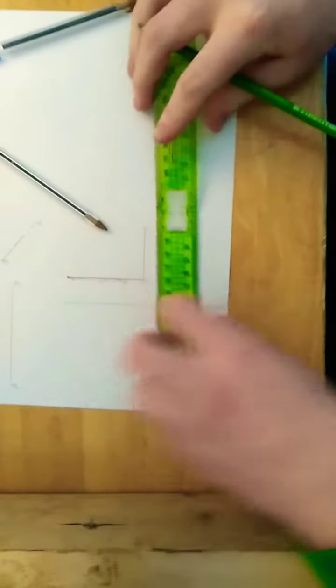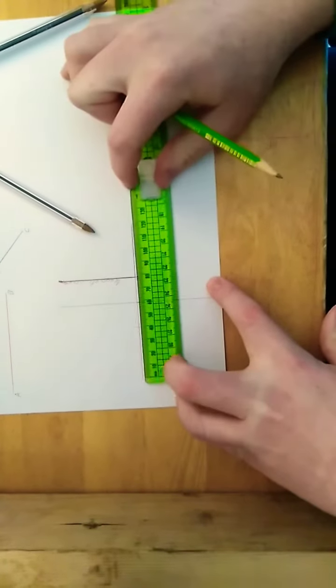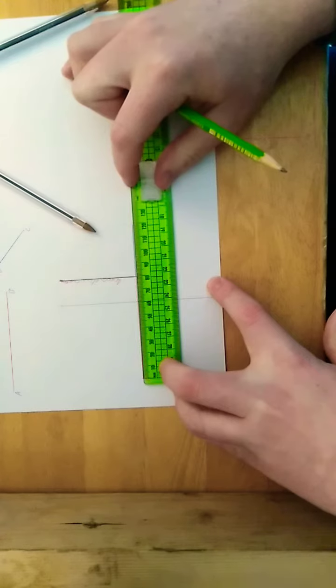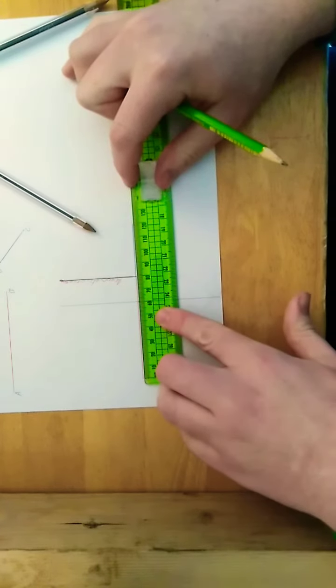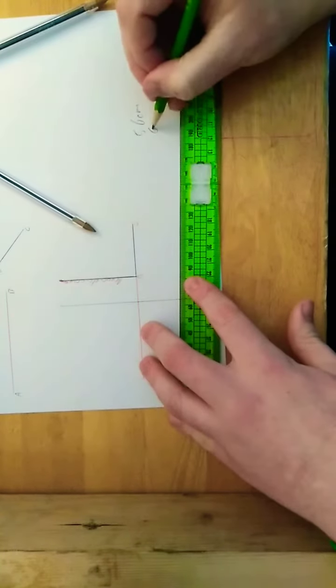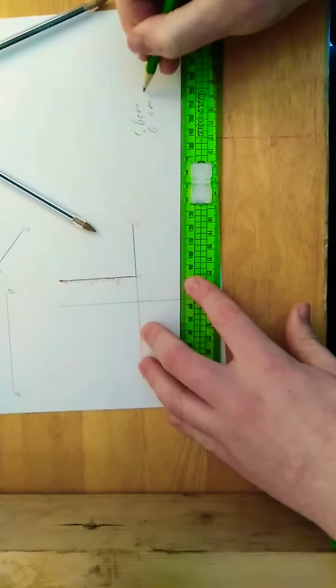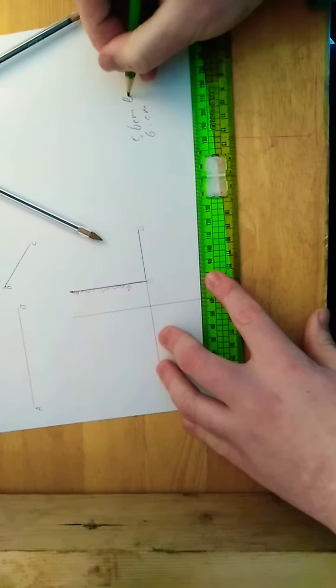Whereas if I were to get the length of this line here and divide it by 2, there's 12 centimeters, which is 6 centimeters. So here's your geometric mean.